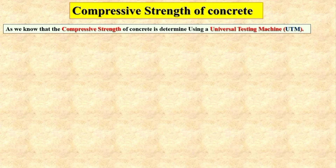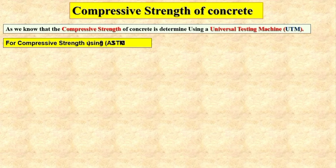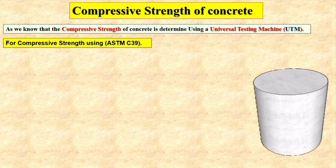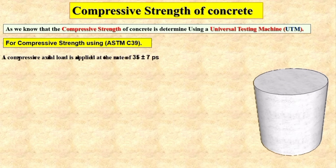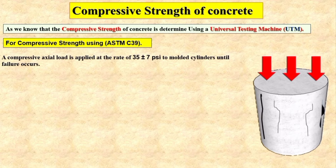For the compressive strength of concrete, we use the ASTM C 39 specification. According to ASTM C 39, we prepare a cylinder mold and apply the load at the rate of 35 plus or minus 7 psi to the molded cylinder until failure occurs.